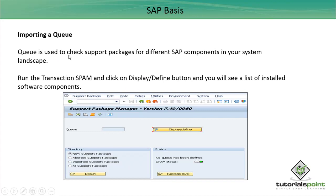A queue is used to check the support packages for different SAP components in your system landscape. In a previous tutorial, we have covered that there are different types of support packages available for different SAP components like SAP Basis, SAP ABAP, SAP HR, or SAP Applications.